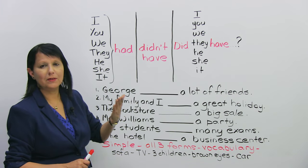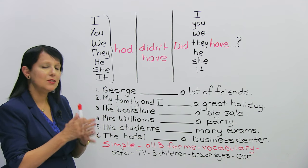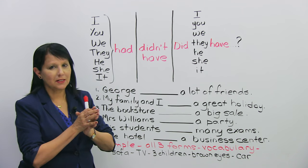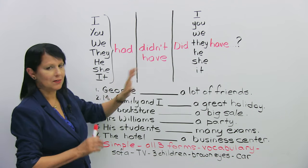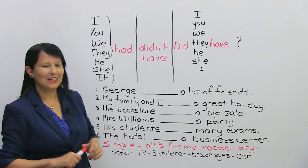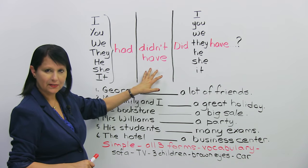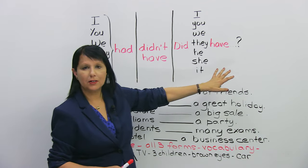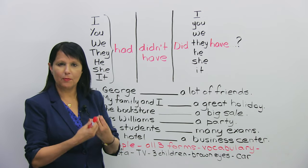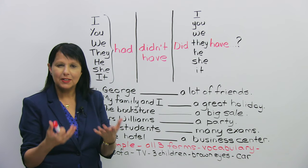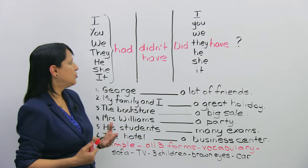Now, what happens when we make it negative? This is where some students get a little bit confused because they remember this, and then they try to put this here, but that's not the case. What happens when we make a negative sentence and when we make a question is that we come back to the base form of the verb. What's the base form of our verb? To have, right?